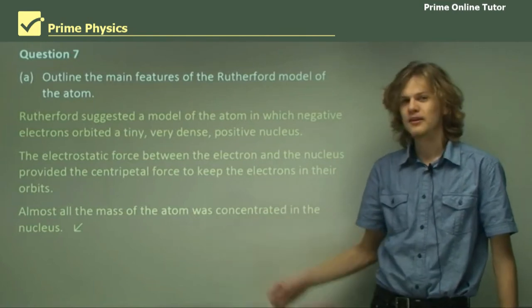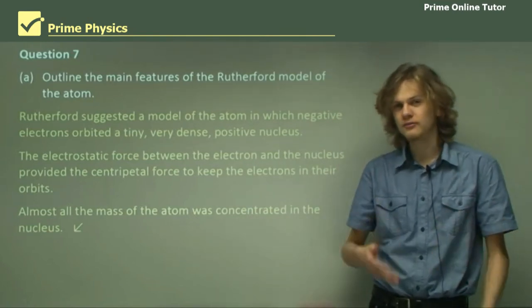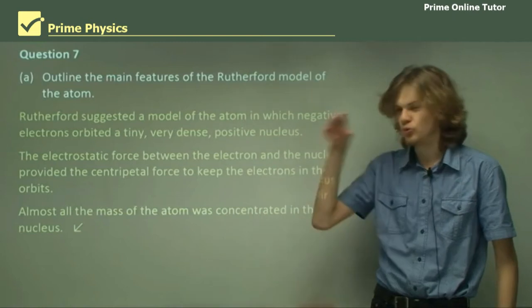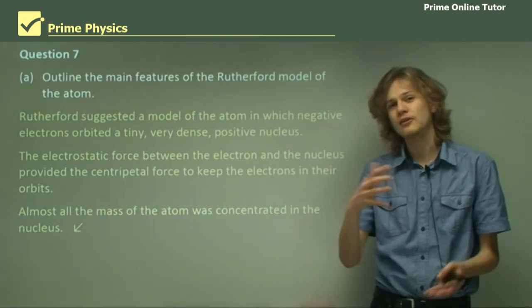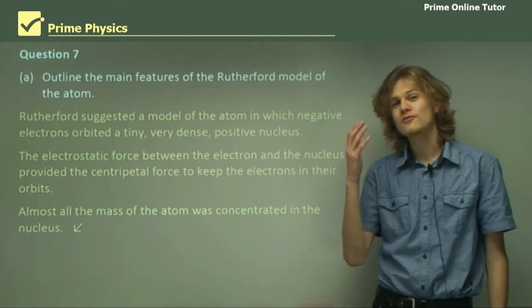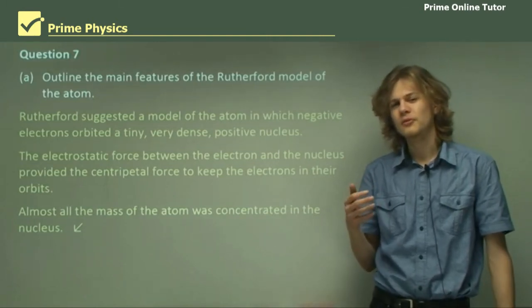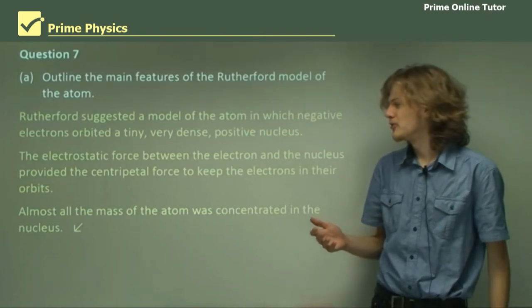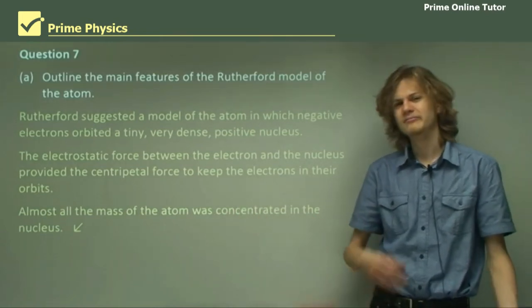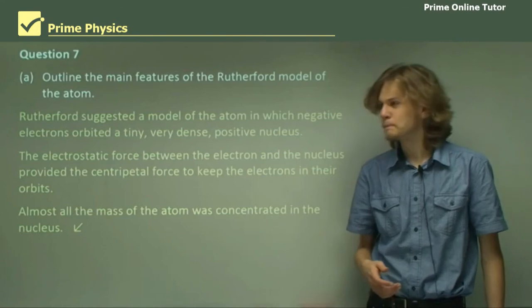Almost all the mass of the atom, a huge amount of it, was concentrated right in the nucleus, with almost no mass contributed by the surrounding electrons. Remember, it was a very, very long time before electrons were determined to have mass at all. That would explain why they seem so light in this model.